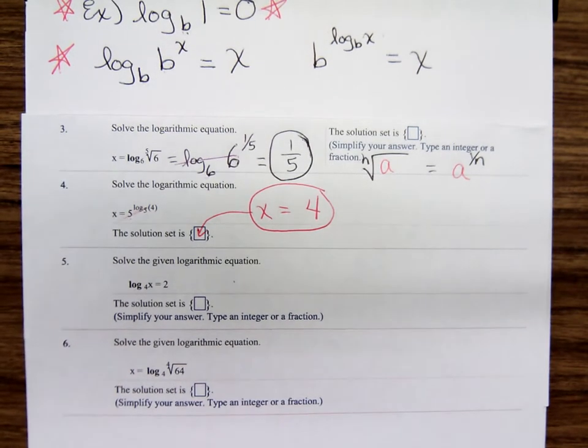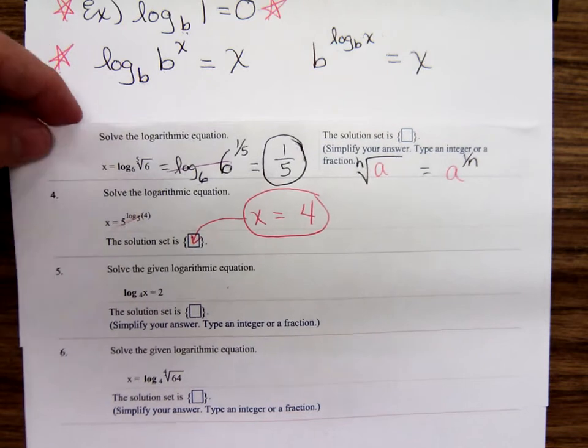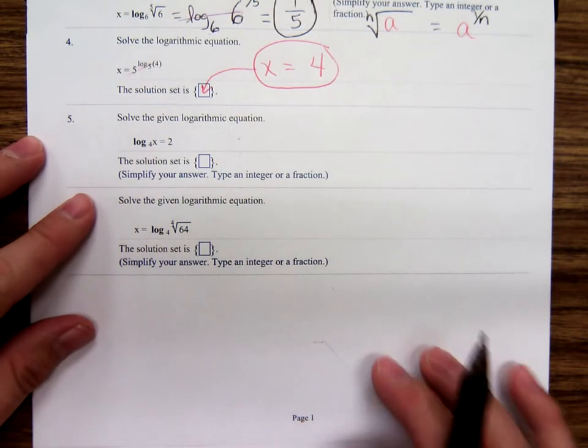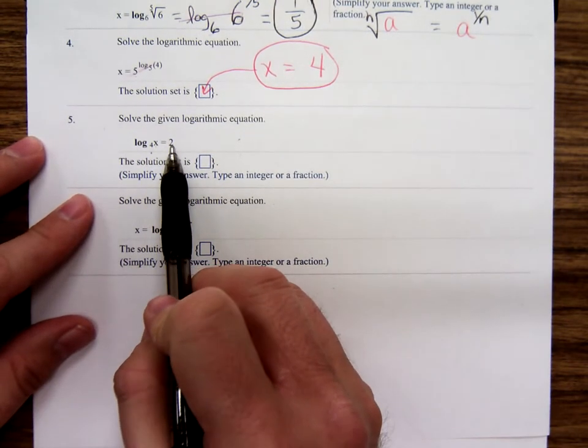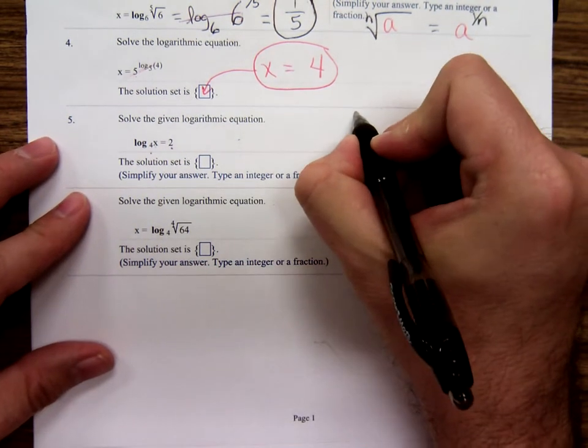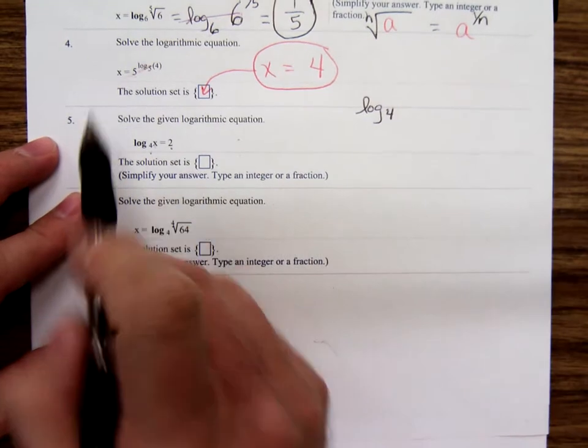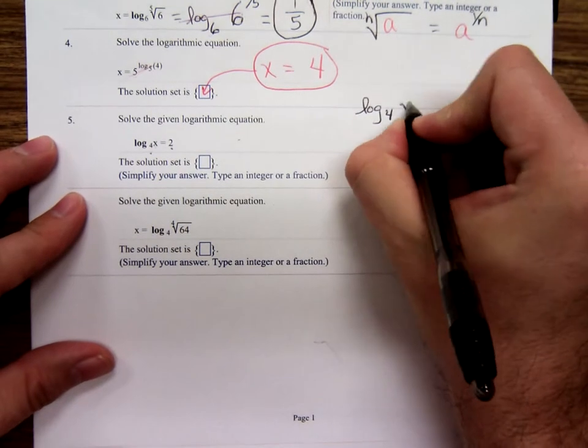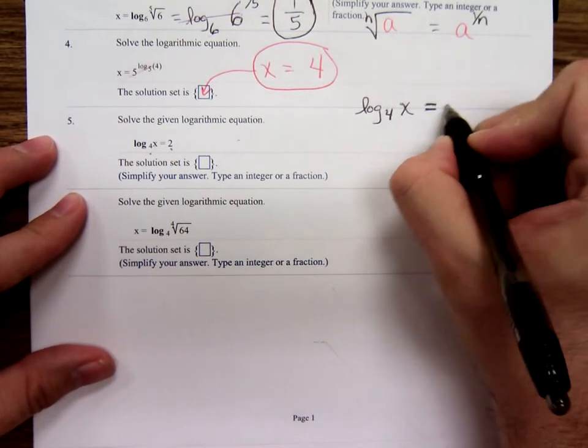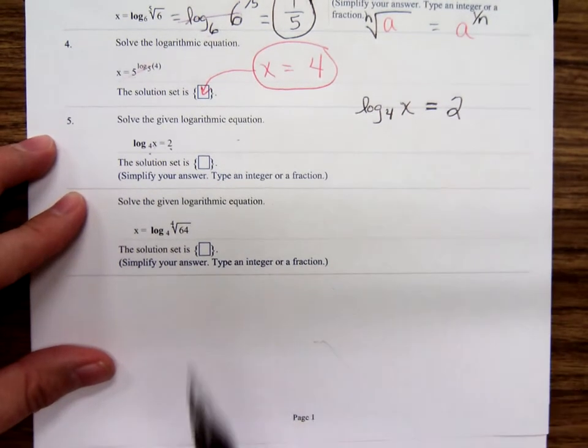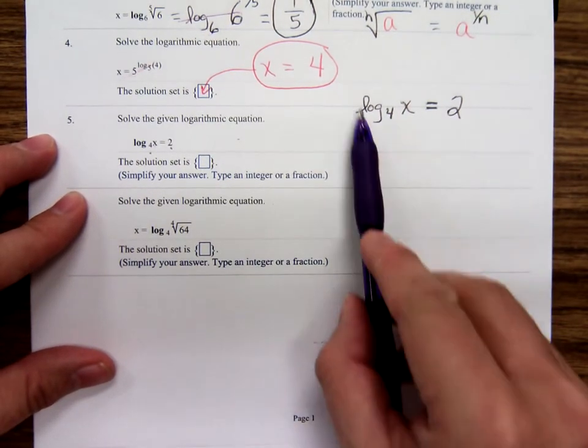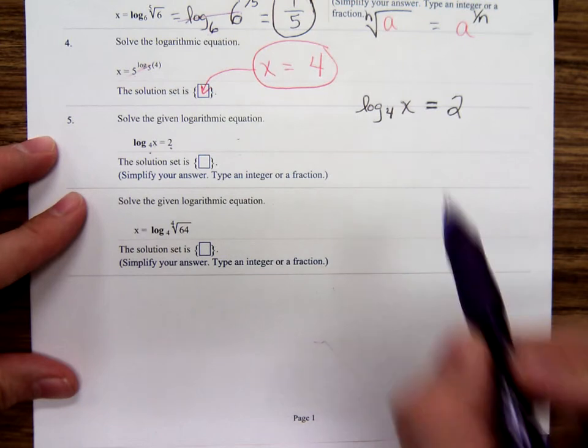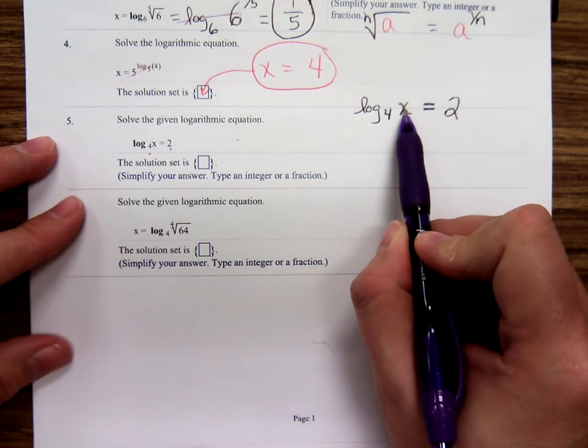Now, for problem number 5. Log base 4 of x equals 2. I'm going to rewrite it right here. This one's different from 3 and 4 because the x is not by itself. We need to somehow get that x by itself. You can't divide both sides by log base 4. Log base 4 is not a number. That's a function. Well, what can we do in order to get this x by itself?